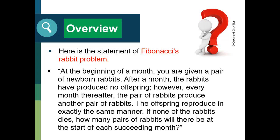To get acquainted with the famous Fibonacci's rabbit problem, here is the statement of that problem. At the beginning of a month, you are given a pair of newborn rabbits. After a month, the rabbits have produced no offspring — that is a month of maturity. However, every month thereafter, the pair of rabbits produces another pair of rabbits. After the original pair reproduces, that firstborn pair of rabbits will reproduce in the same manner. If none of these rabbits dies, how many pairs of rabbits will there be at the start of each succeeding month?